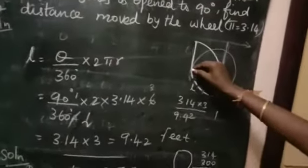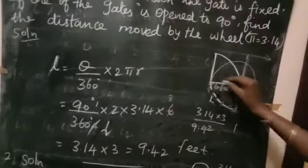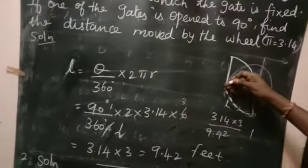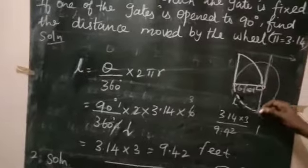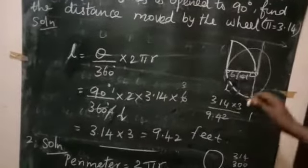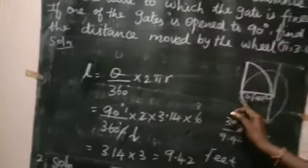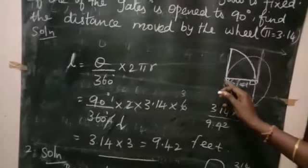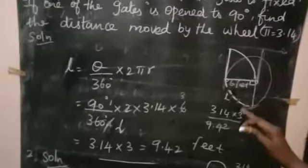Listen students, the gate has a wheel. It comes here, making an angle of 90 degrees. We want to find out the value of distance or length, so we want to find out the length of arc.